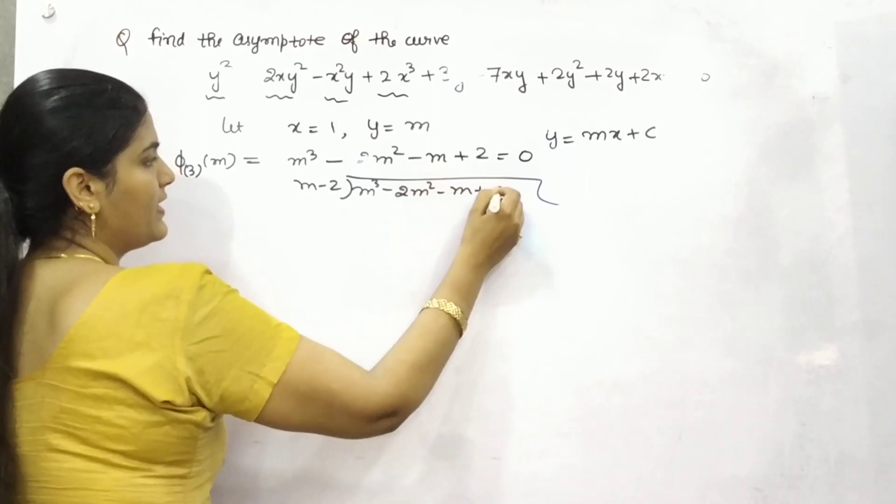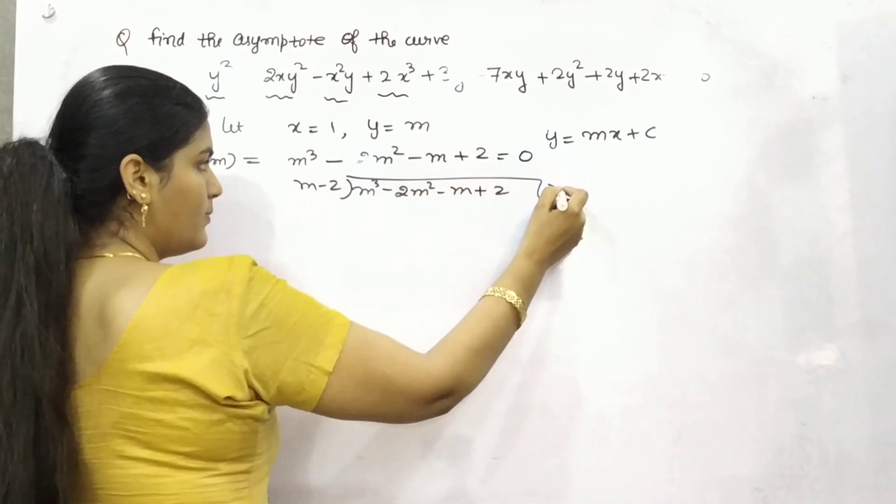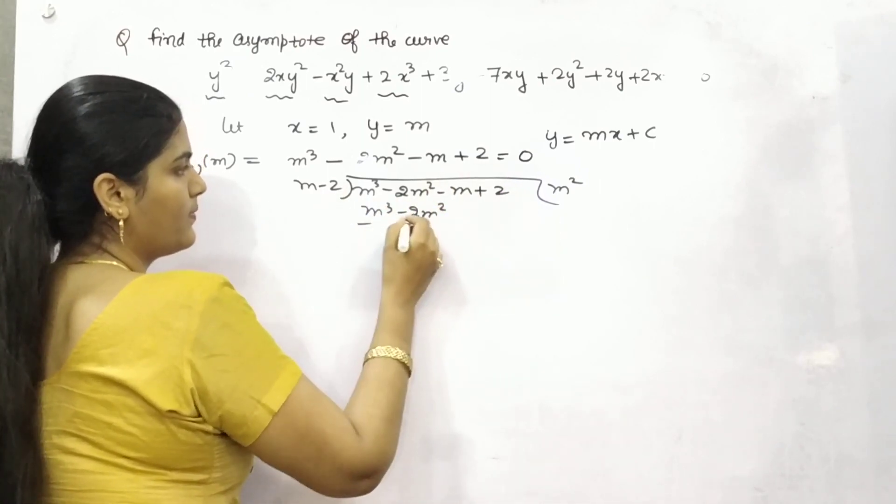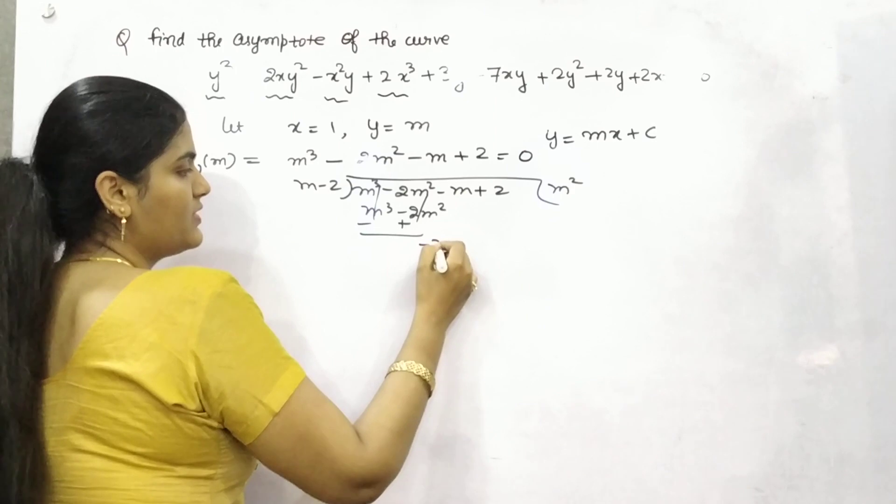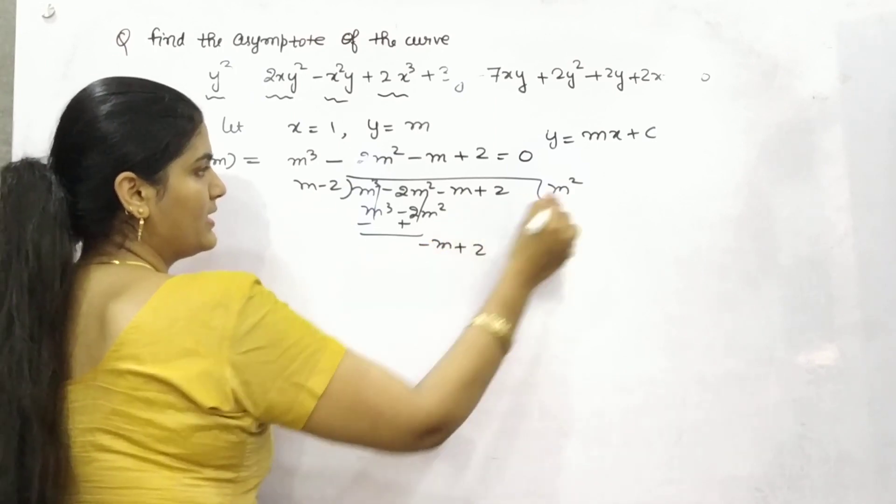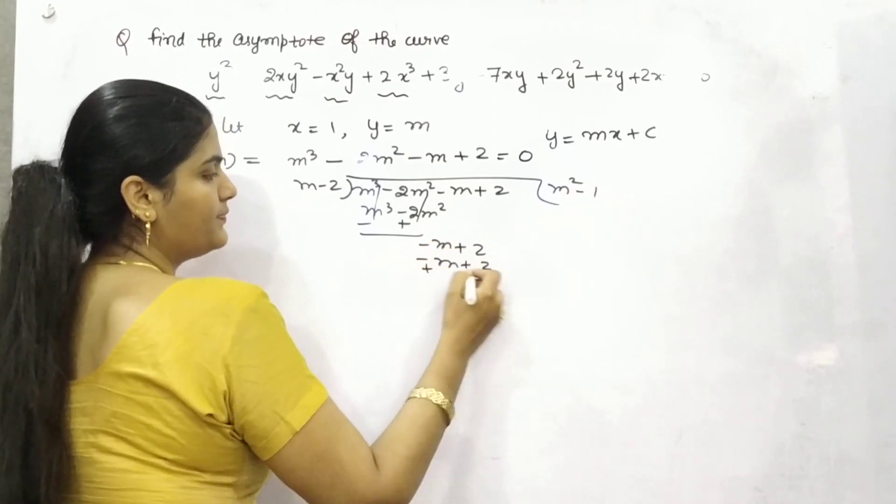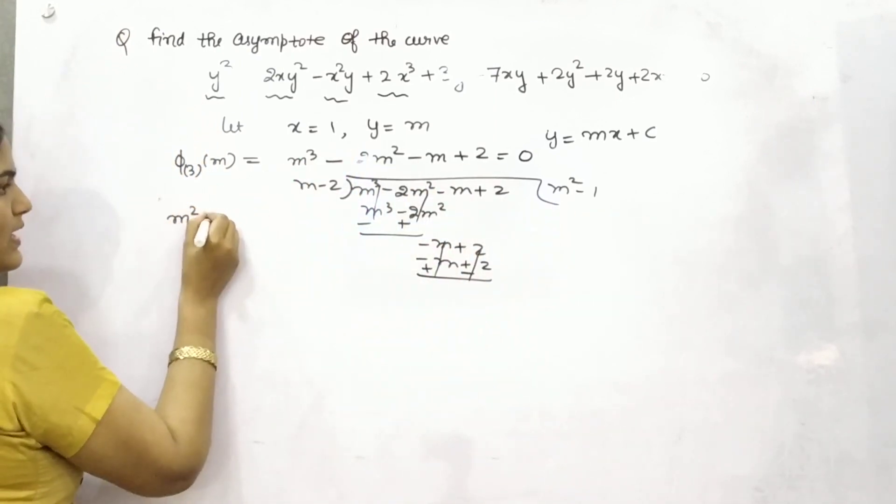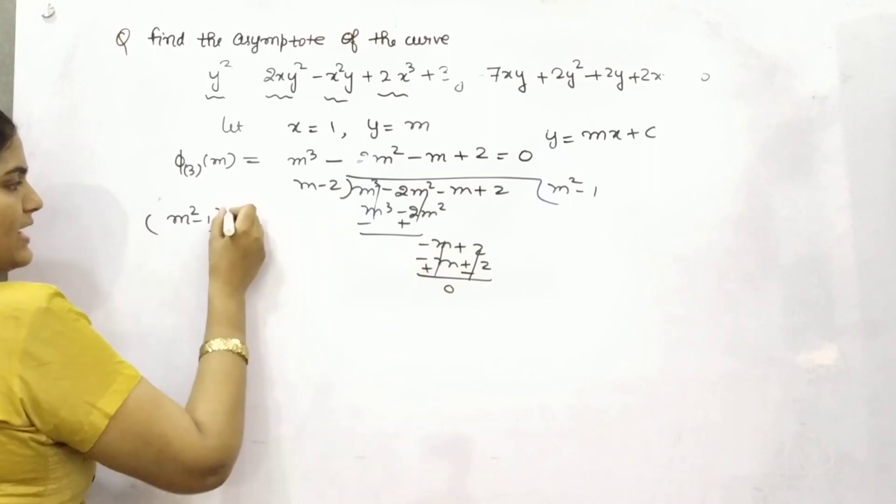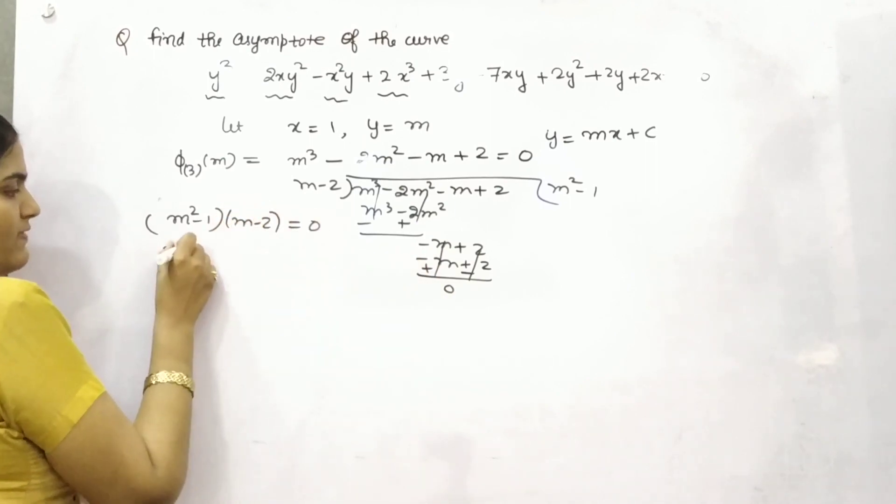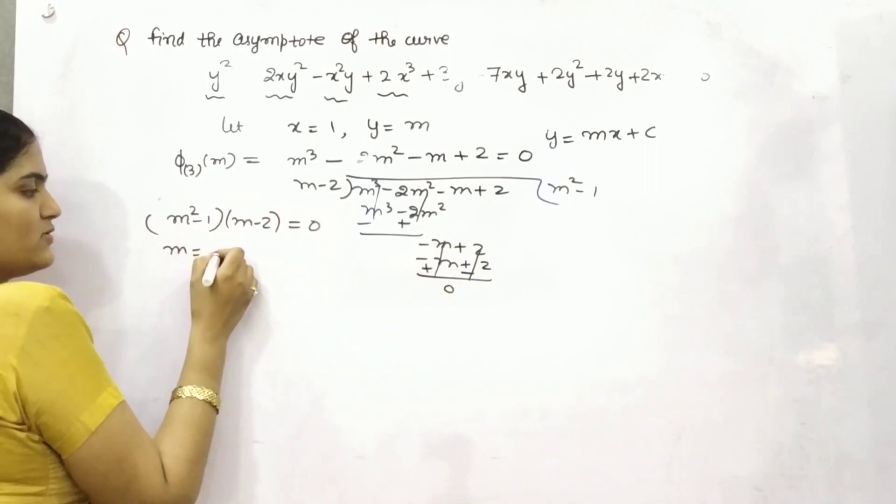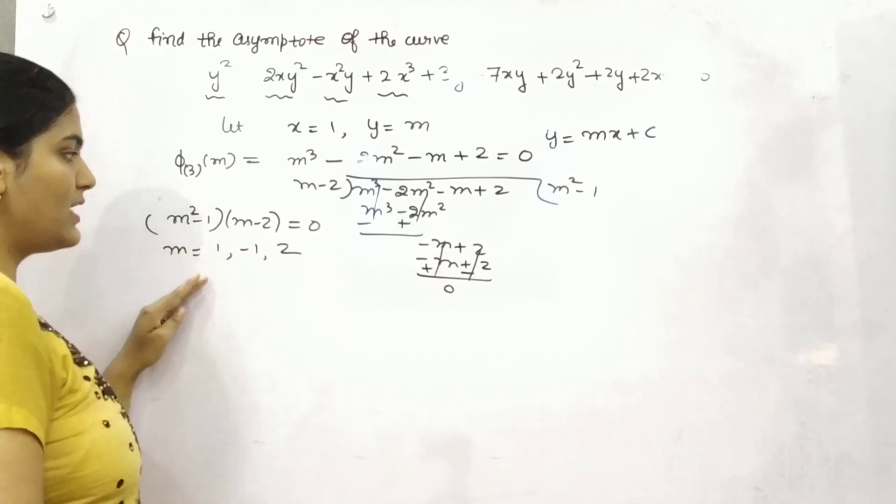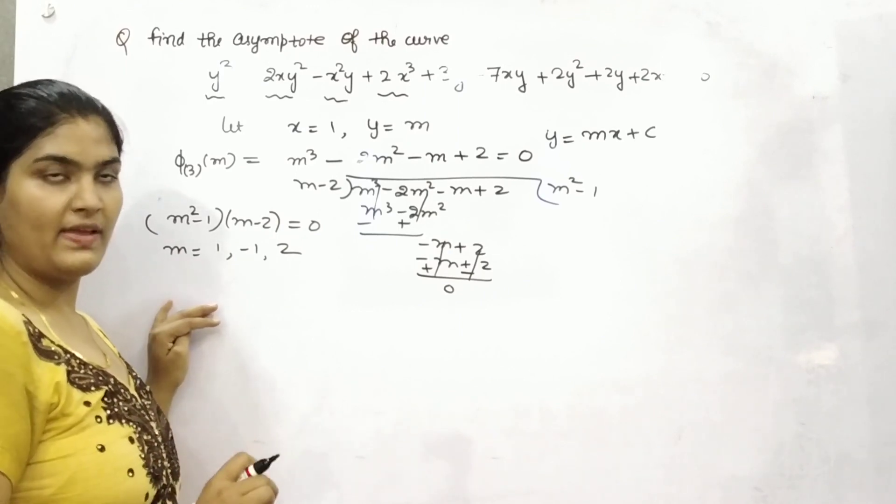So now find out rest by long division m square, m cube minus 2m square, then after minus m plus 2, so minus 1. So the roots are m square minus 1 and m minus 2. So the values are 1, minus 1, and 2. These are your values of m. So first step is to find out the value of m.